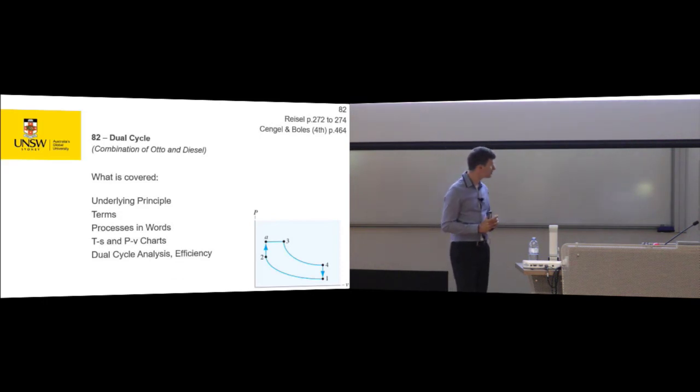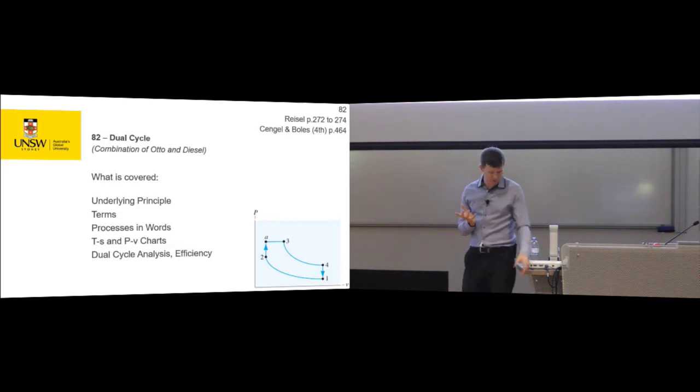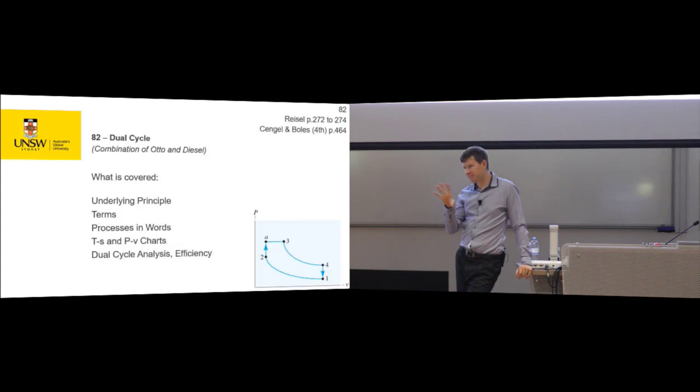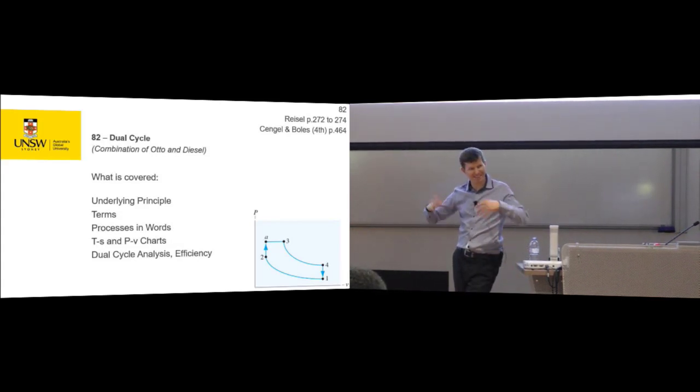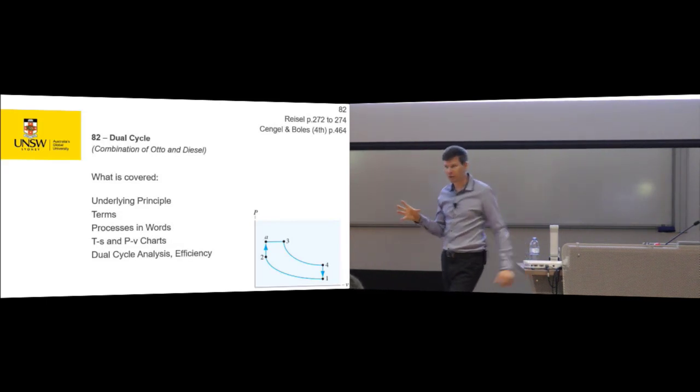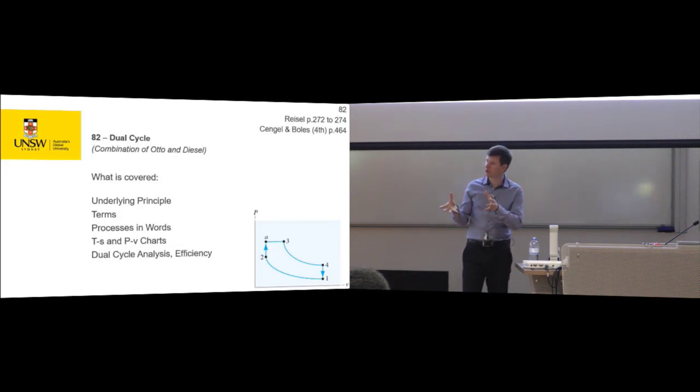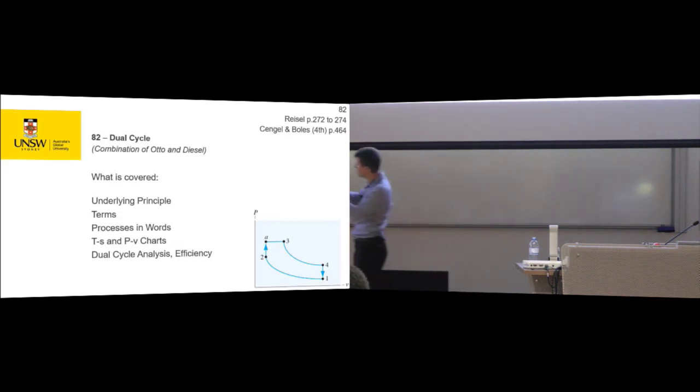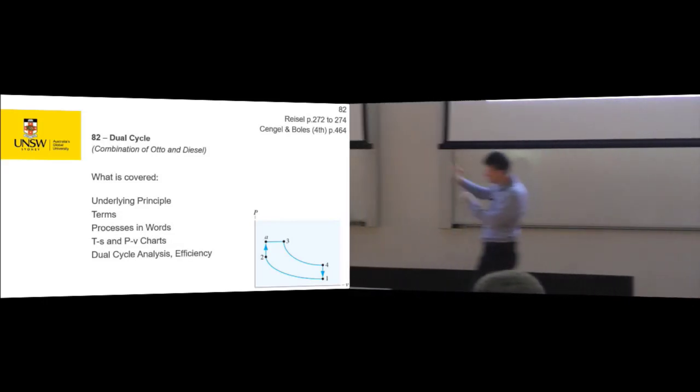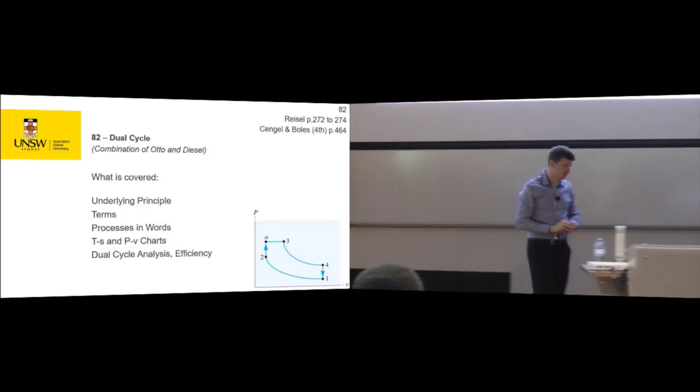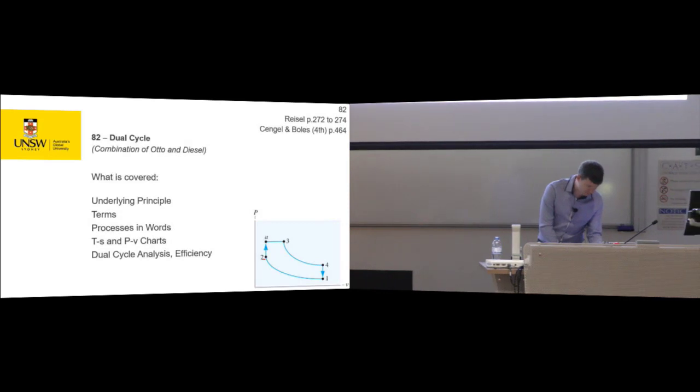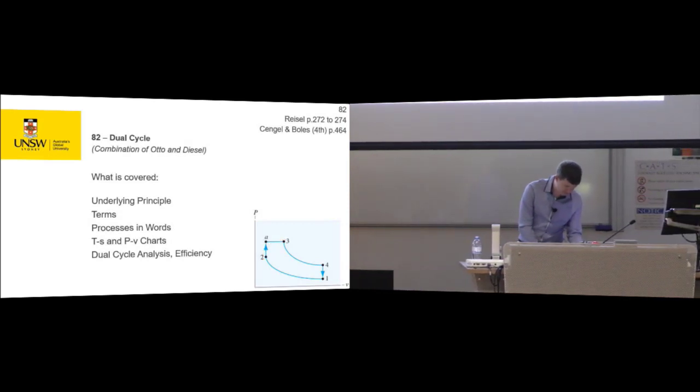Dual cycle then. It's only going to take a few minutes. So the dual cycle comes about because, in truth, the ignition process is neither isochoric nor isobaric, but is somewhere in between. And so the idea is that we could match our real life cycle more accurately if we kind of modeled, well, some of it's going to be isochoric and some is going to be isobaric.